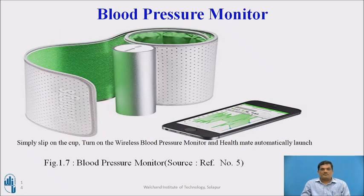The next example is the blood pressure monitor. You simply put on the cuff, turn on the wireless blood pressure monitor, and the Health Mate app automatically launches. While having a cup of tea, just use this monitor system — the wireless blood pressure monitor sends information about your BP to the Health Mate app running on your mobile, which automatically displays your blood pressure information.